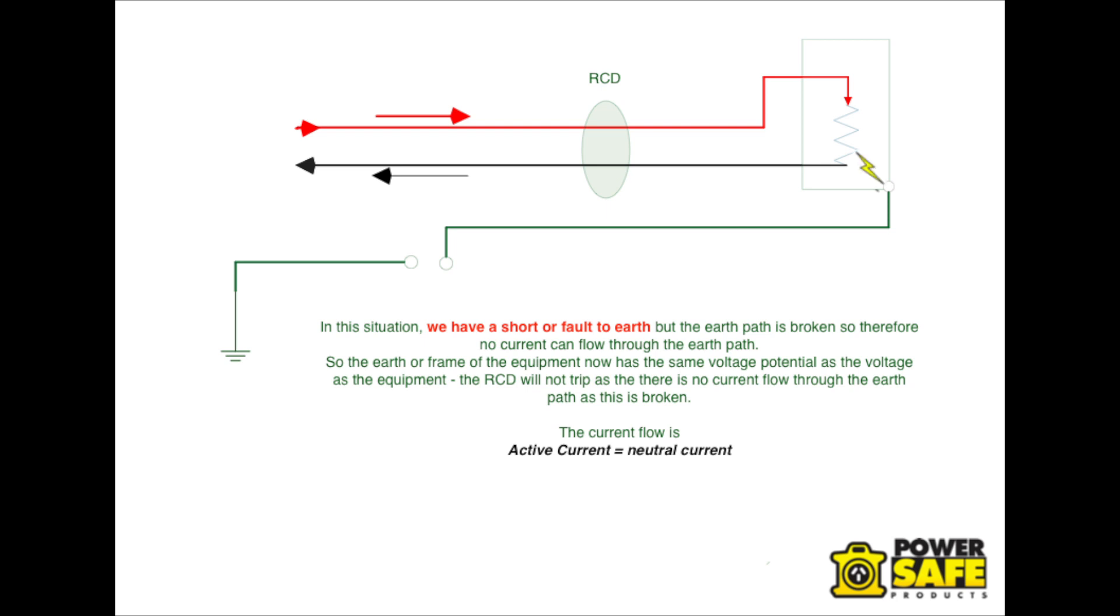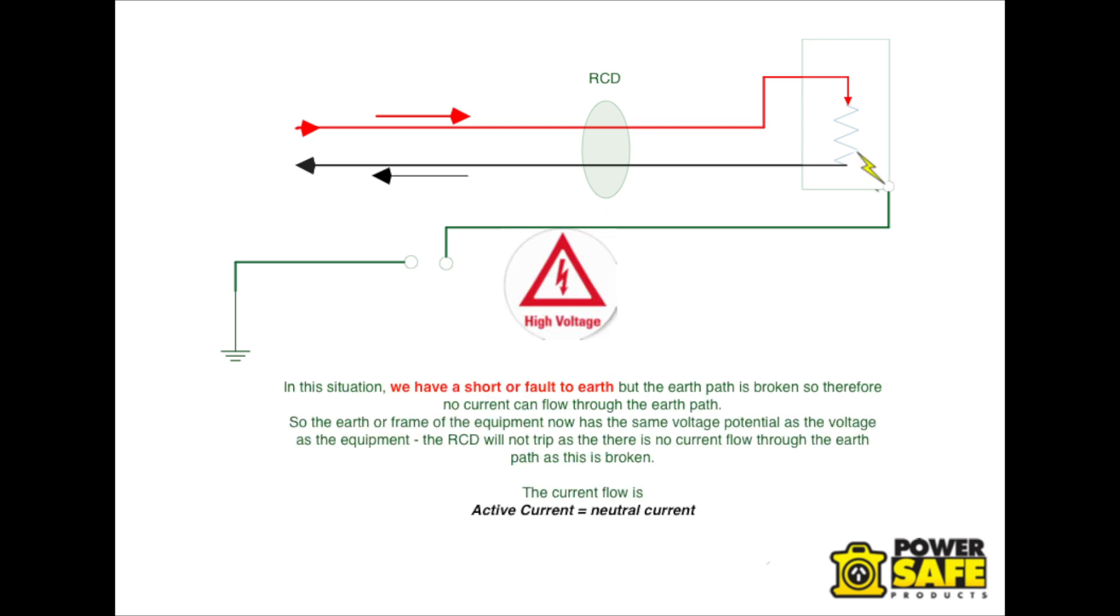If the earth path is broken, then there is no current flow, so the RCD will not trip and the whole earth system to the point of the earth path is broken becomes live or has potential voltage.